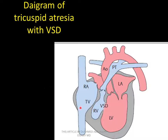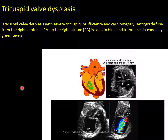Tricuspid atresia with VSD: right ventricle, left ventricle, left ventricle and left atrium, right ventricle and right atrium — enlarged right atrium, tricuspid atresia. Blood goes through left ventricle to right ventricle. This is the pulmonary artery — tricuspid atresia with enlargement of the right atrium and VSD, small right ventricle, hypoplasia of the tricuspid valve. Tricuspid valve dysplasia with severe tricuspid insufficiency and cardiomegaly — retrograde flow from right ventricle to right atrium seen as blue turbulent flow coded by green pixels.